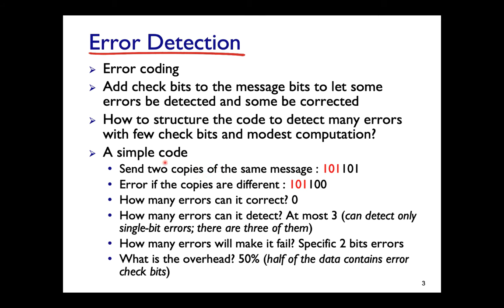Consider a simple example: a 3-bit message with an error code that simply repeats the message — sending it twice. If the message is 101, you also send 101 as the error code bits. At the receiver, if the two copies differ (e.g., 101 vs 100), you detect an error. This lets us evaluate: how many errors can we correct, how many can we detect, and what is the overhead?